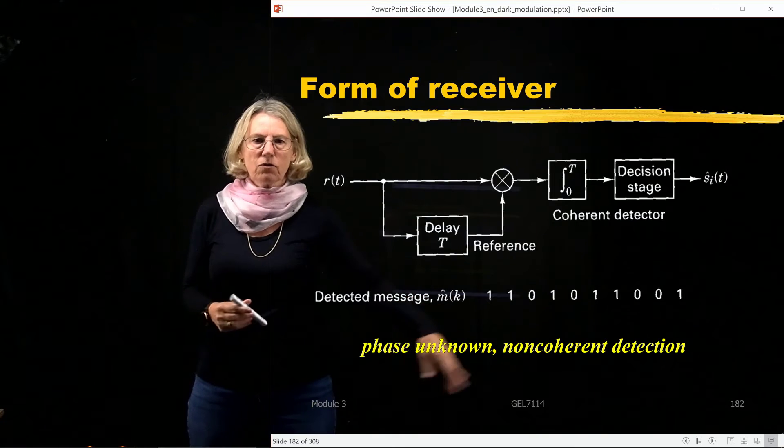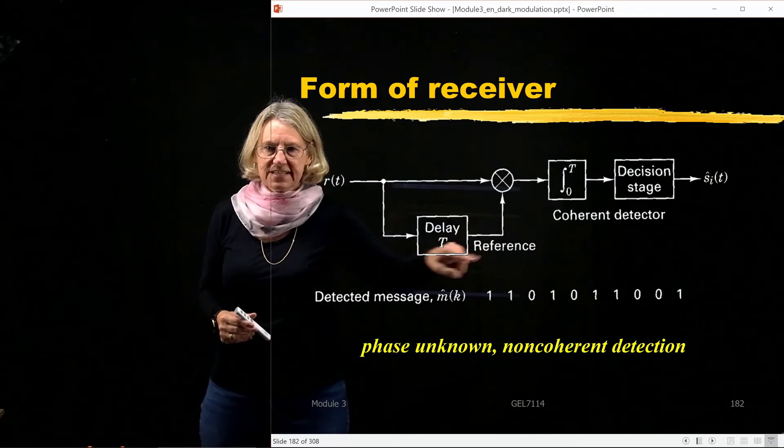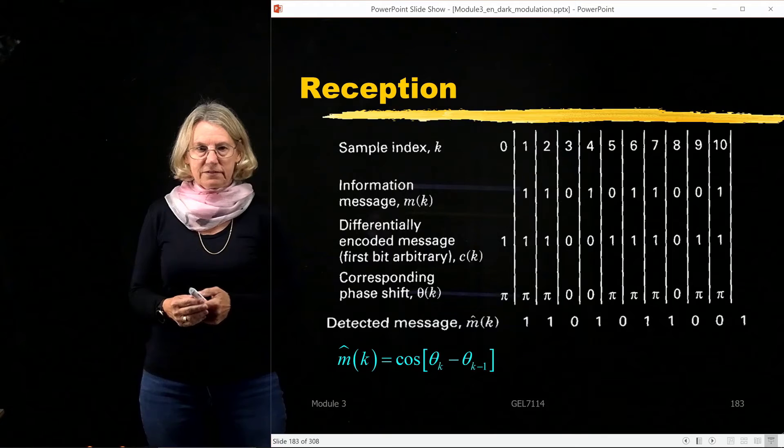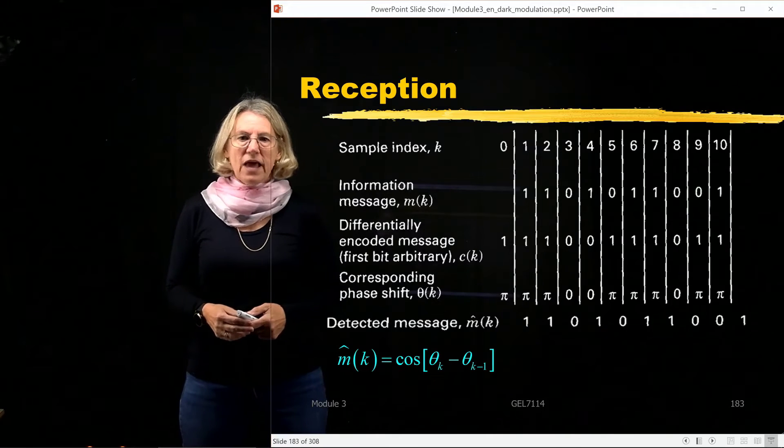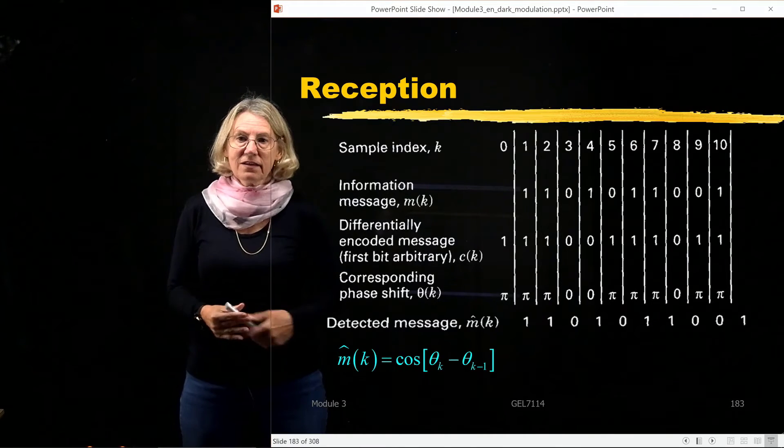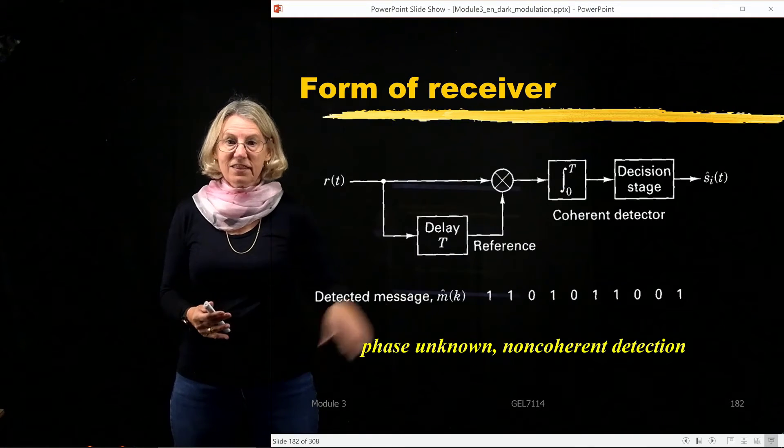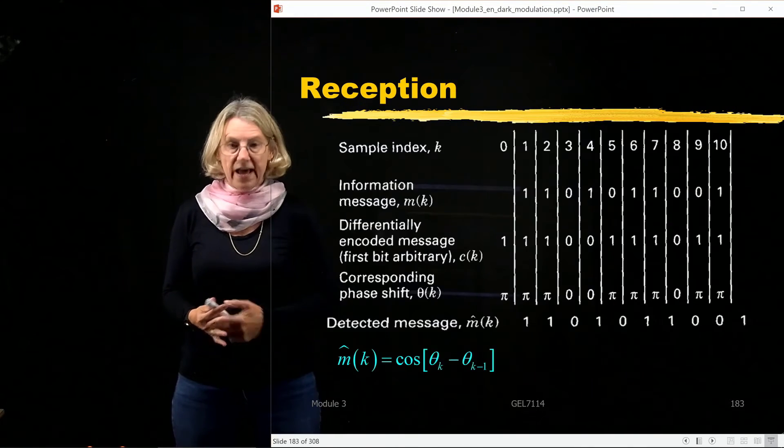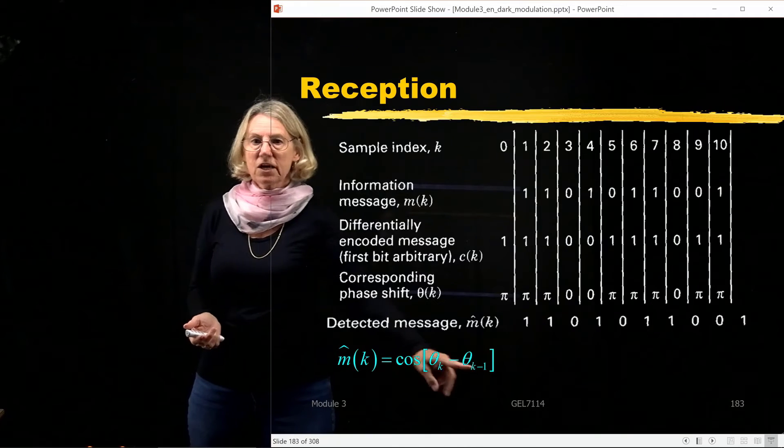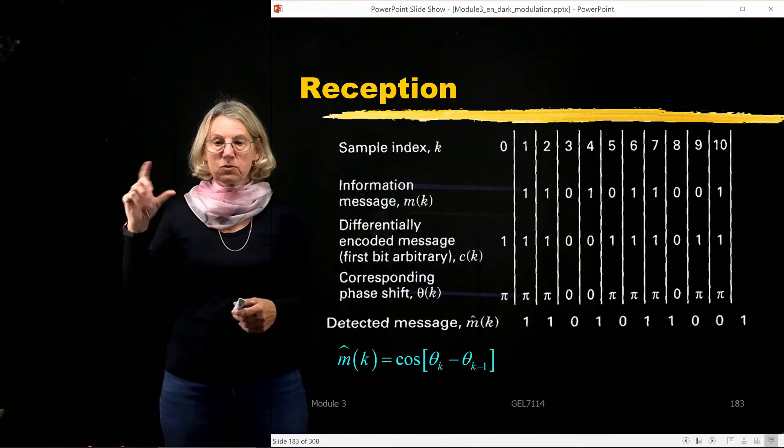Again, this is phase unknown, non-coherent detection, so I have this self-reference that I'm using. So now I'm going to estimate the bit that was transmitted, and because I'm using this receiver structure,